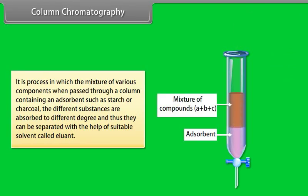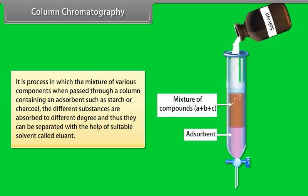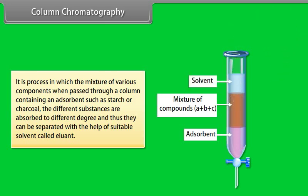Column chromatography: it is the process in which the mixture of various components, when passed through a column containing an adsorbent such as starch or charcoal, is adsorbed to different degrees. Thus the components can be separated with the help of a suitable solvent called the eluent.